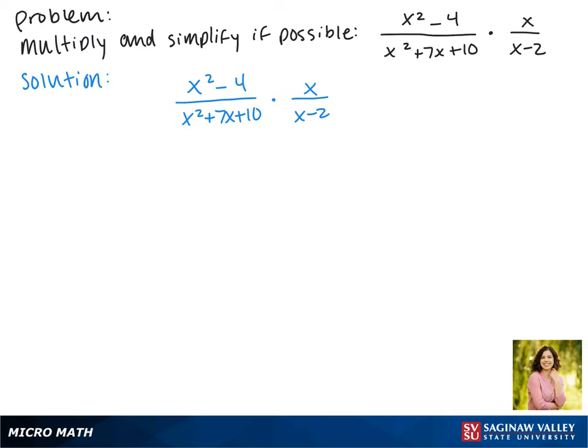First, we need to factor the x squared minus 4. This is the difference of squares since both are perfect squares, so we get x plus 2 and x minus 2.